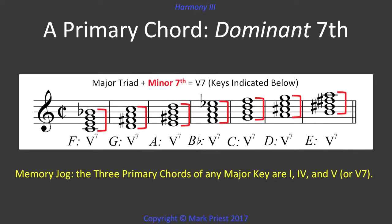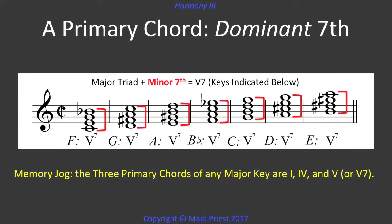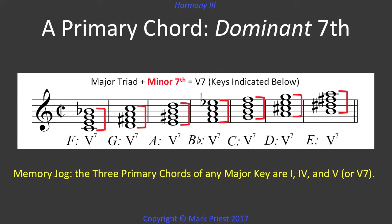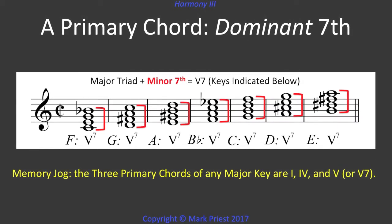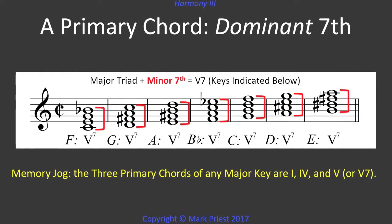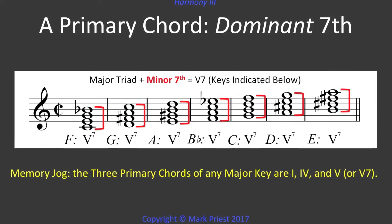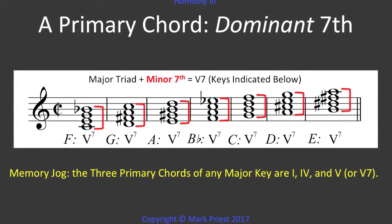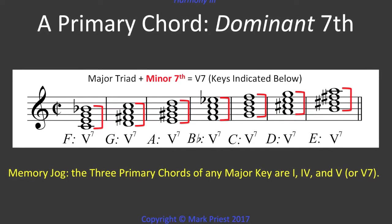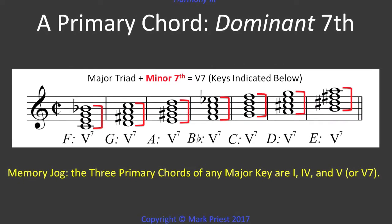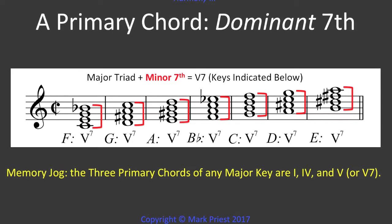Moreover, dominant 7th chords consist of a major triad plus a minor 7th interval, counting up from the root of the chord. Like the dominant triad or V chord, the dominant 7th or V7 is, by definition, a primary chord of the key a 5th below its root. Always.